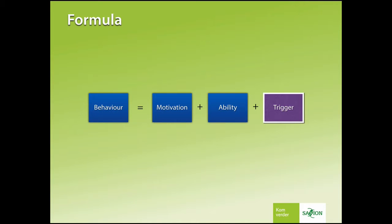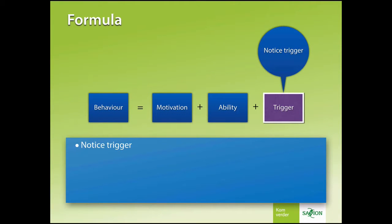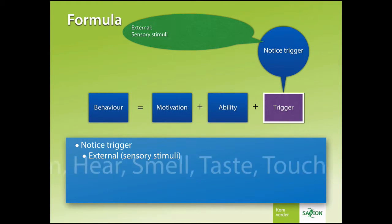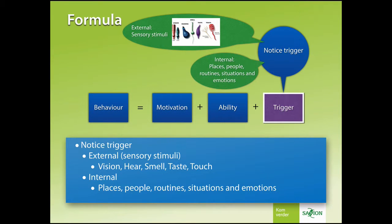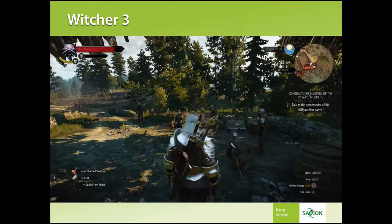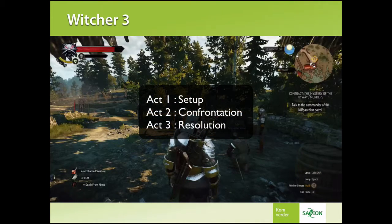We motivated the player and checked the ability — now it's up to us to create the trigger. The trigger will notify the player that something is going on. We can use external triggers: vision, hearing, smell, taste, and touch. Or internal triggers: places, people, routine, situations, or emotions. Let's take a look at a game like The Witcher 3. Usually games will use a classical 3-act structure. Act 1 is the setup that creates anticipation. Act 2 is the confrontation — doing the challenge. Act 3 is the resolution — getting your reward. The trigger is displayed on screen: talk to the commander of the Nilfgaardian patrol.